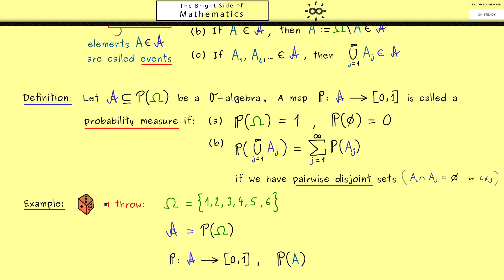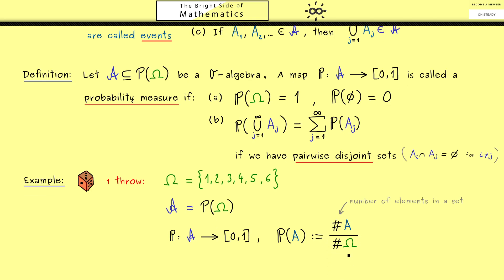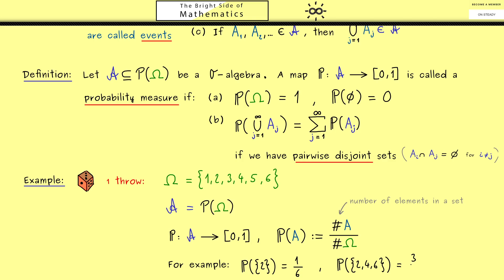We define the probability measure on this sigma algebra. In our case with an ordinary die, each side has the same probability. Therefore in our general definition, we count the elements of A and divide by the elements of omega — so the denominator is 6. For example, the probability of the event of throwing a 2 is 1 over 6. On the other hand, the probability of the event of throwing an even number is 3 divided by 6, or in other words 1 half.